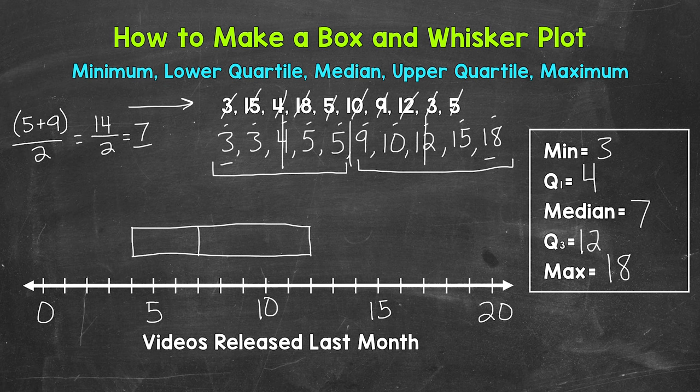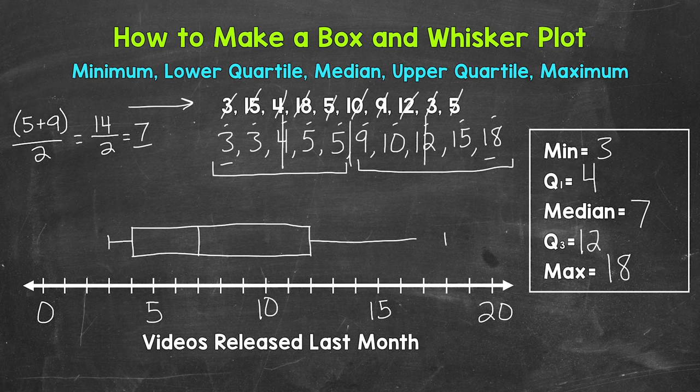And then lastly, we have the whiskers, which extend to the minimum and maximum. Let's do the minimum first. The minimum is 3. So let's draw a mark here and extend that whisker to the minimum. Then we have the maximum, which is 18. So let's make a mark at 18 and then extend the whisker to that maximum of 18.